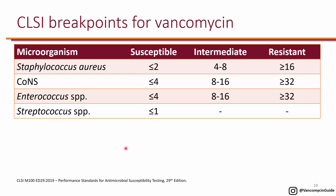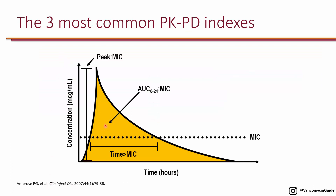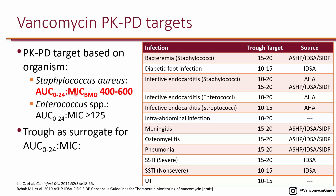There are three common PK/PD indices: peak-to-MIC ratio, AUC-to-MIC ratio, and time above MIC. For vancomycin specifically, AUC-to-MIC is the PK/PD target most associated with efficacy. For Staphylococcus aureus specifically, we want an AUC-to-MIC ratio of 400 to 600. You want it to be at least 400 but not too high because of toxicity issues. An AUC-to-MIC of 400 to 600 is recommended by the 2011 IDSA guideline as well as the new 2019 IDSA guidelines currently in draft.